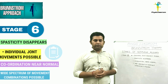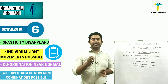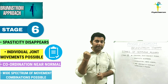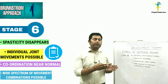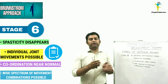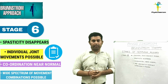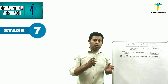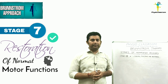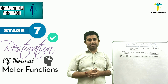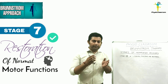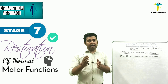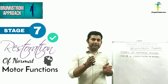In Brunström Stage 6, spasticity disappears and the patient is able to perform isolated joint movements. The patient gains voluntary control over a wide spectrum of movement combinations with near-normal coordination. Brunström Stage 7 is characterized by restoration of all normal functions, with the patient becoming completely independent in performing all daily activities in a normal, purposeful, and coordinated manner.